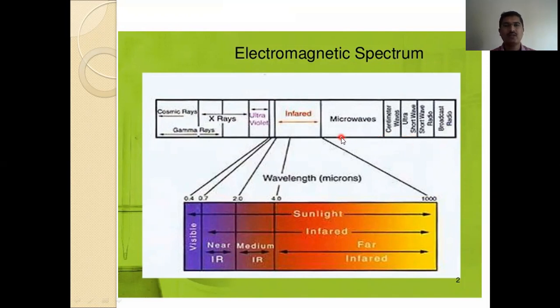But we focus here only on infrared, that is IR. The range of this is 0.4 to 1,000 microns, that is wavelength. Here, this range is sunlight below 0.7 to 1,000 infrared. Here, near IR, medium IR, and far IR.